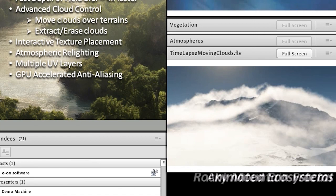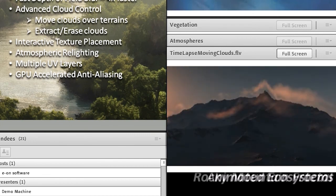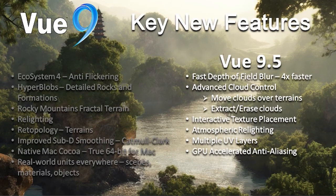We've also added a fast depth of field blur — a highly requested feature — which improves depth of field performance by at least four times, and in many cases nearly ten times faster over the old methods. We've also added a new interactive texture placement widget, so if you have objects with UVs and textures you want to modify, you can do so directly inside Vue without using an external program like UV Mapper. Finally, we've implemented GPU-accelerated anti-aliasing, improving anti-aliasing performance for all types using capabilities directly on the GPU.